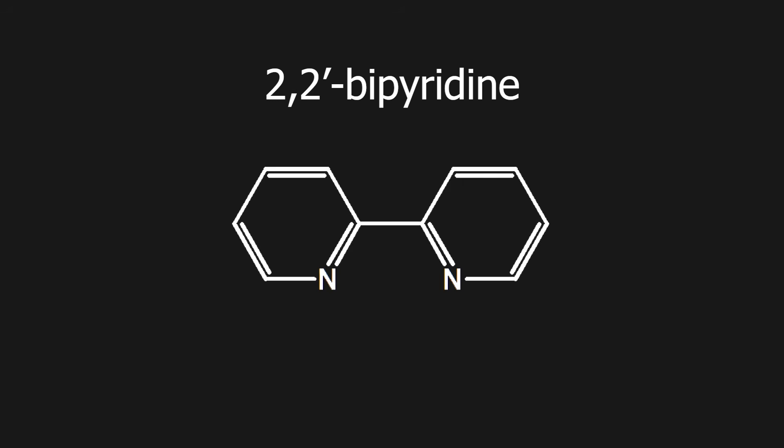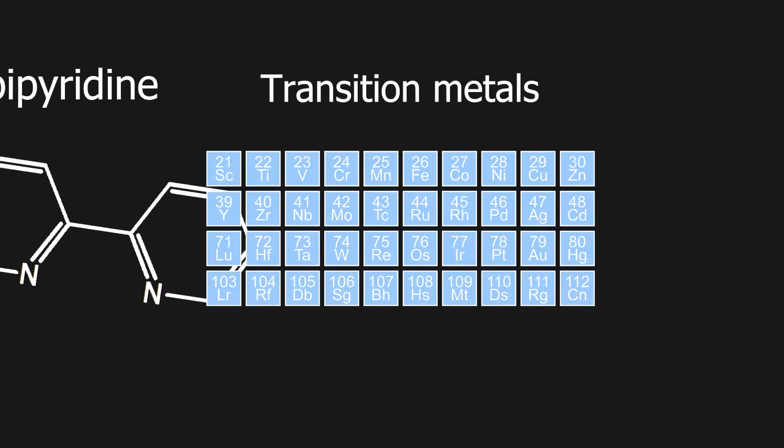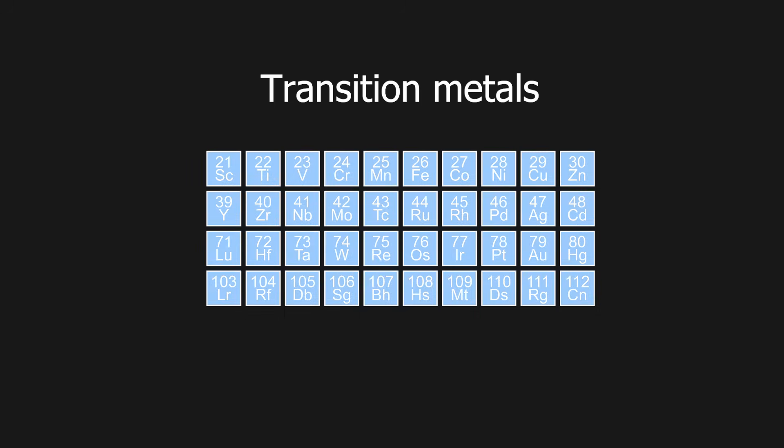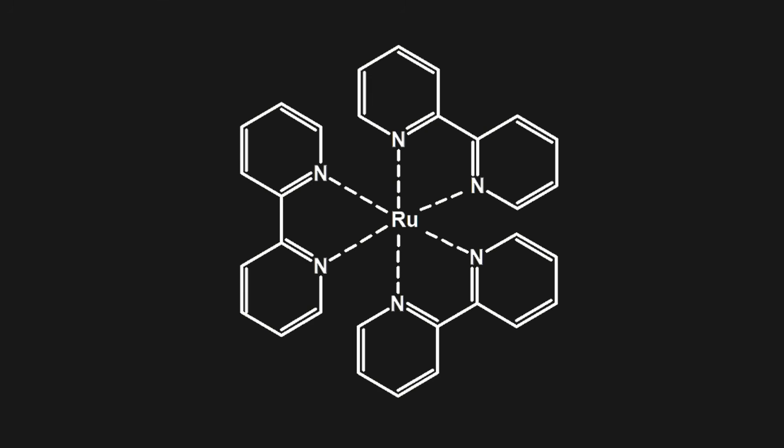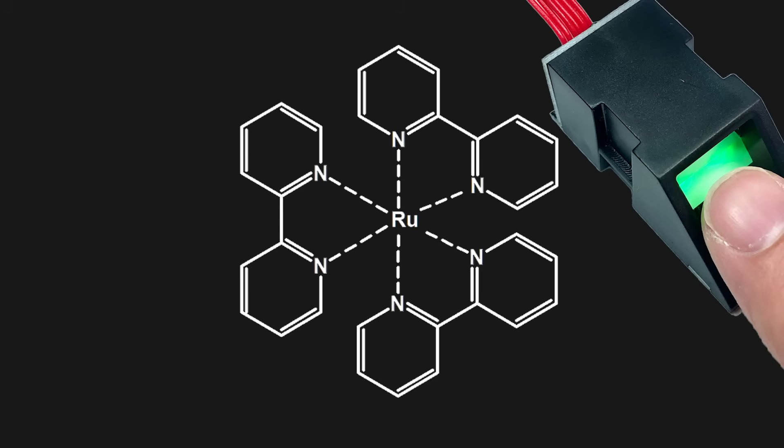In this video I will be making 2,2'-bipyridine, which is a chelating ligand that is able to complex with many transition metals and is therefore used in catalysis. One of the more interesting complexes is the ruthenium complex, which finds use in optical applications like sensors and OLEDs.